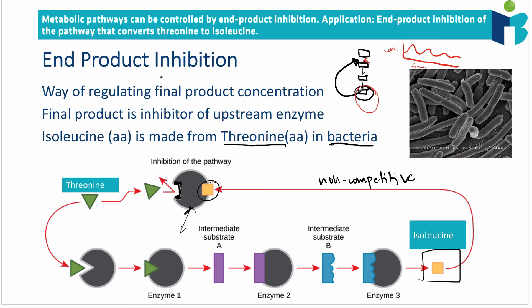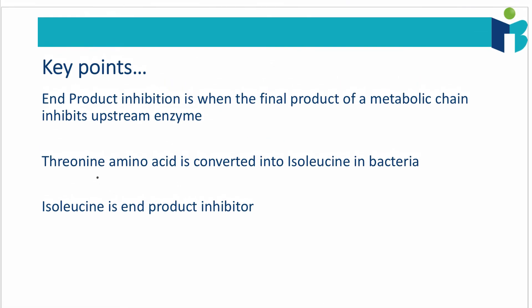So isoleucine is an example of end product inhibition. The key points are: end product inhibition is when the final product of a metabolic chain — note it must be a chain, not a cycle, since cycles have no end product — inhibits an upstream enzyme that originally helped form it. Threonine is converted into isoleucine in bacteria, and isoleucine acts as a non-competitive inhibitor. You don't need to know the enzyme names, just that fact.